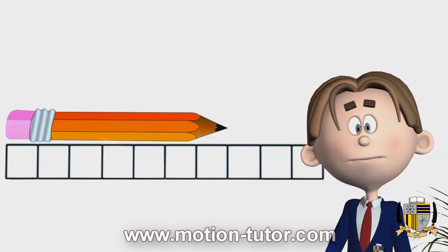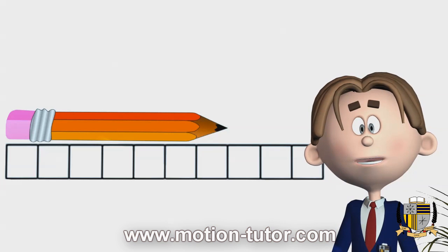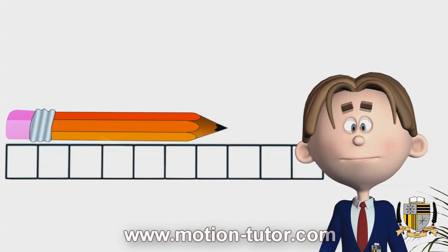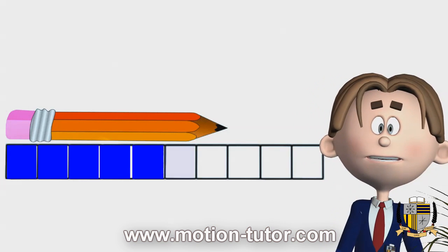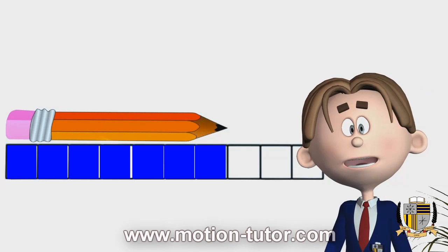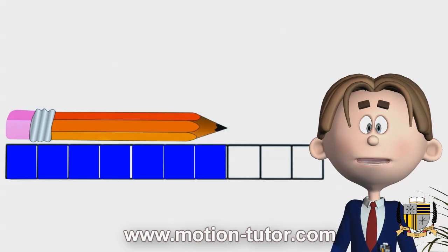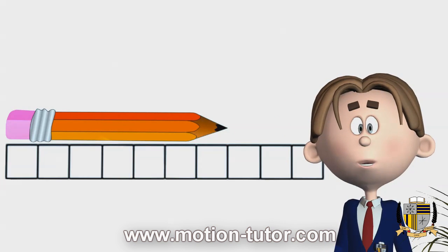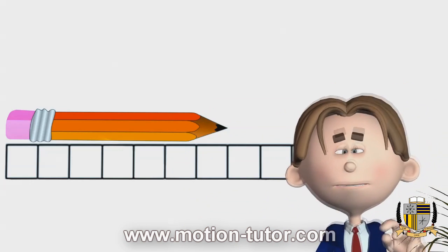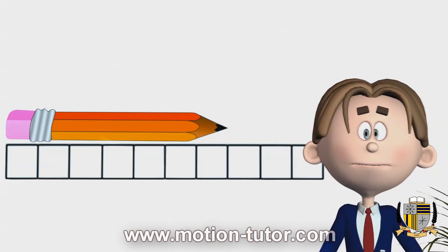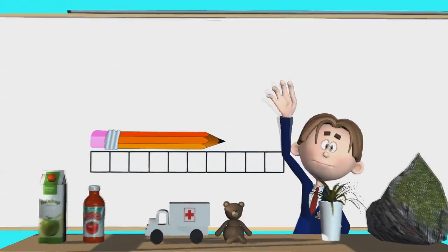Now take a look — this is the same pencil and I have more boxes out here. But exactly how many boxes long is this pencil? One, two, three, four, five, six, seven — it's still seven boxes long. Although there are extra boxes laying here, it's still seven boxes long. I just did that to show you something. That's all for now — be sure to visit MotionTutor.com for more video lessons and subscribe for more updates. Goodbye!